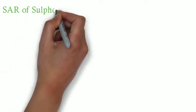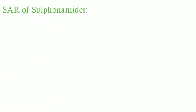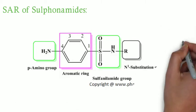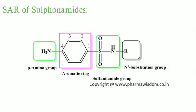Moving on to the structural activity relationship of sulfonamides: the sulfanilamide skeleton is the minimal structural requirement for antibacterial activity. The amino and sulfonyl groups on the benzene ring are essential and should be at positions 1 and 4 respectively. The sulfur atom should be directly linked with the benzene ring. Replacement of the benzene ring by another ring system or introduction of additional substitutions abolishes the activity, and any other substitution in the benzene ring produces inactive compounds.